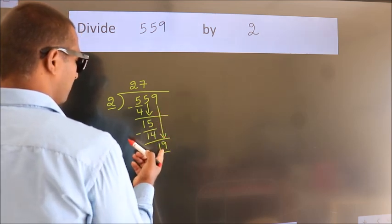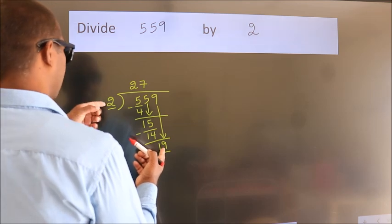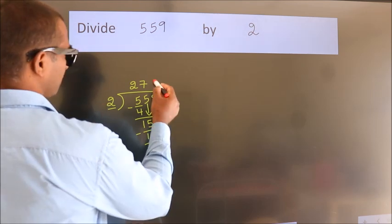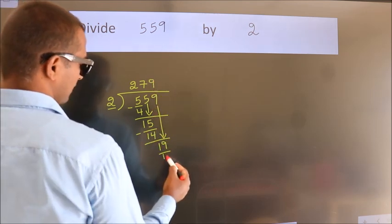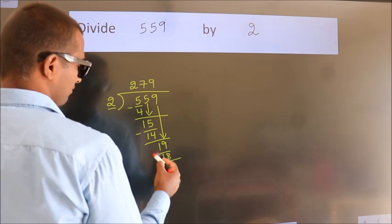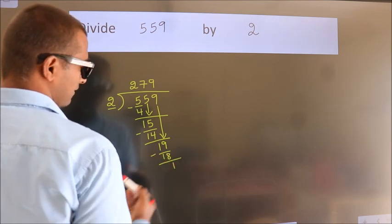So, 19. A number close to 19 in 2 table is 2 9's, 18. Now, we subtract. We get 1.